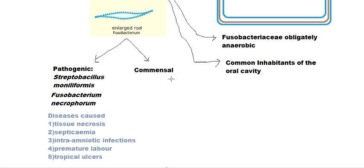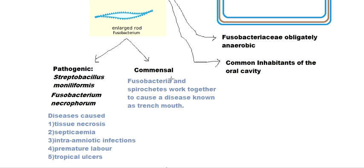An example of commensalism is that Fusobacteria and spirochetes — another phylum of bacteria — work together to cause the disease called trench mouth. When they work together they can cause this disease, and this is a good example of commensalism in Fusobacterium.